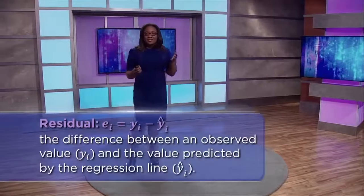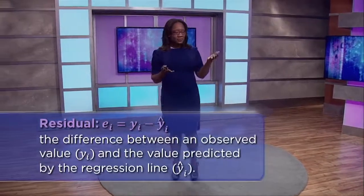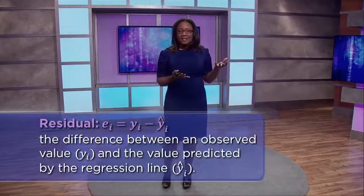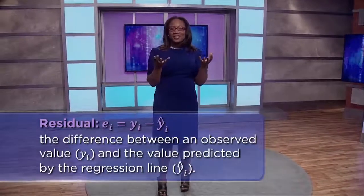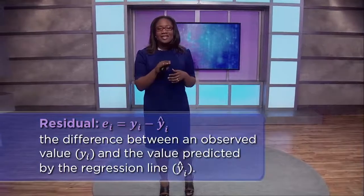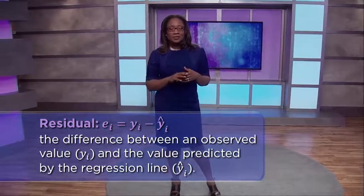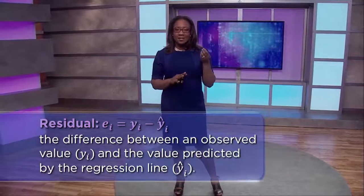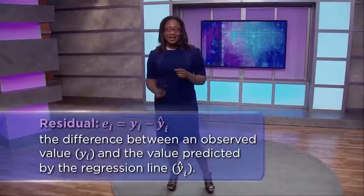We also need a way to understand how well our regression line fits the data. Our residuals are what we use to help us do just that. A residual is the difference between our observed value yᵢ and the predicted value by the regression line ŷᵢ. We use eᵢ to represent the residuals: eᵢ = yᵢ − ŷᵢ. Many students get confused at this point because residuals eᵢ seem the same as errors εᵢ, so let's clarify.